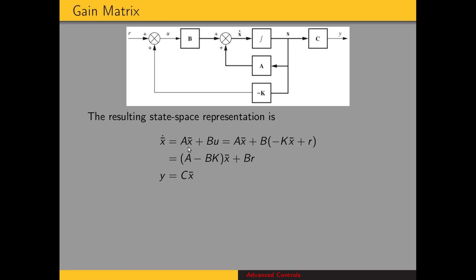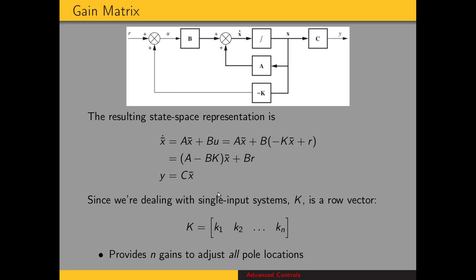The resulting state space representation shows ẋ = Ax + Bu, as before. But now u is the sum of r and the feedback signal: u = -Kx + r. Rearranging, we get the new state equation. The output equation is unchanged — it's still the C matrix times the state vector. This difference gives us our new state matrix. Since we're dealing with single input, single output systems, K is a row vector with n components, giving us n gains to adjust all pole locations.